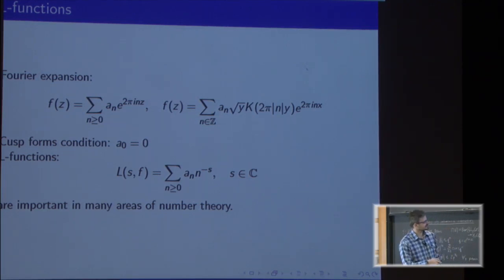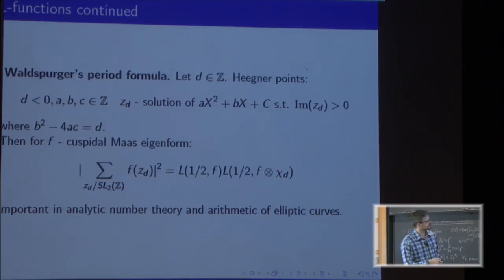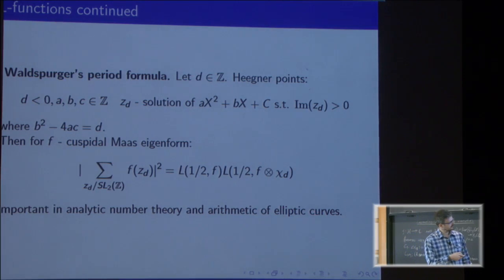I want to show a particular example called Waldspurger's period formula. We take an integer d that is negative, and we take z_d to be a solution of a quadratic equation ax² + bx + c, where a, b, c are integers. We want the discriminant to be d.